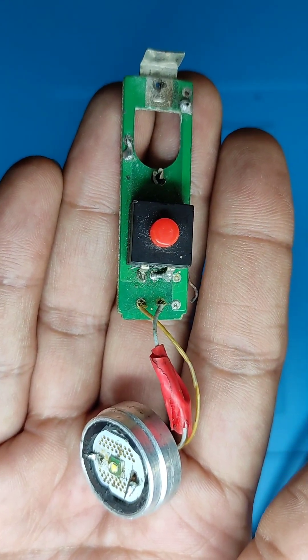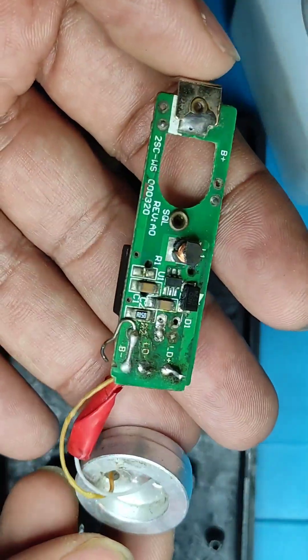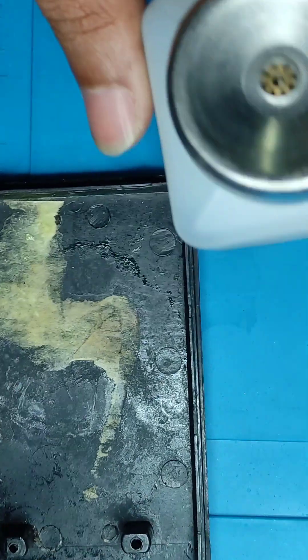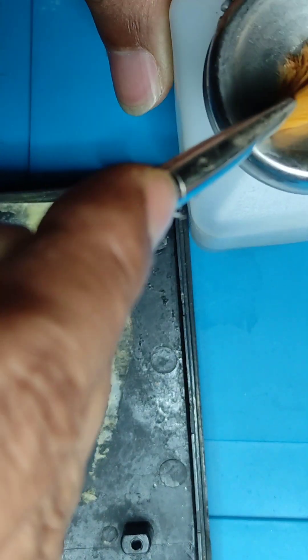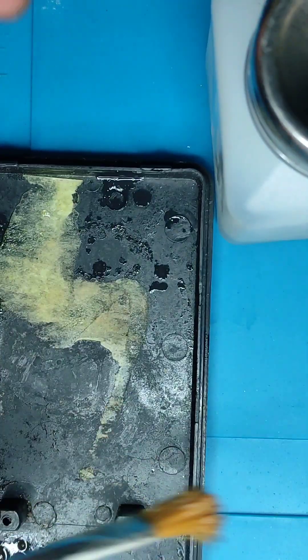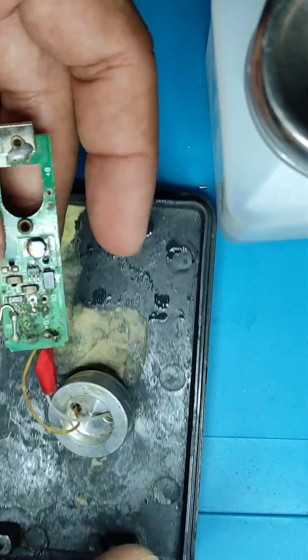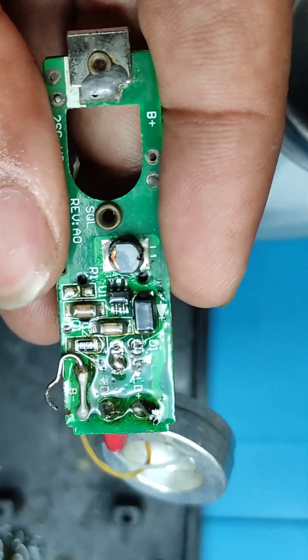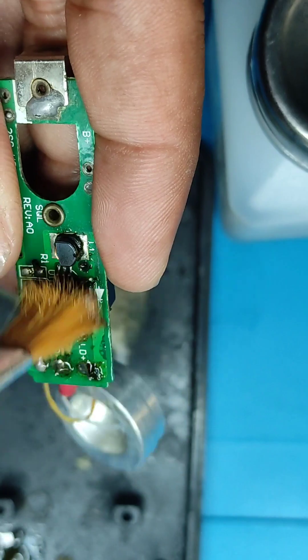But before that we need to clean this board because as you have just seen, this board is completely filled with flux residues from the previous repair attempts. So I'll be using generous amount of IPA to clean this board. I need to wash the LED also because both of them have a lot of flux residues.